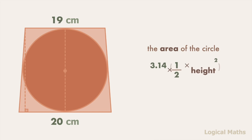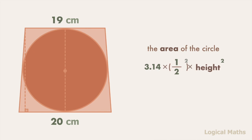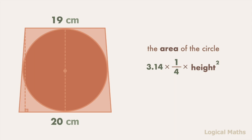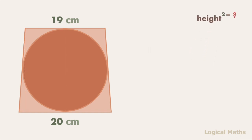After substituting this into our formula we get 3.14 multiplied by one-half multiplied by height, all squared. Which equals 3.14 multiplied by one-half squared, multiplied by height squared. We can calculate the second multiplier: 3.14 multiplied by one-fourth gives us 0.785, so the final formula is 0.785 multiplied by height squared. Now let's find the value of height squared.